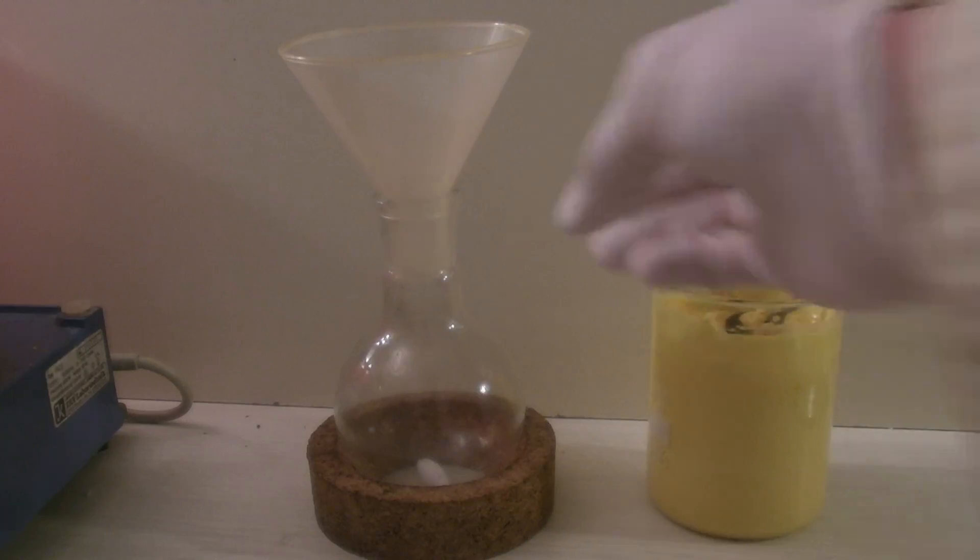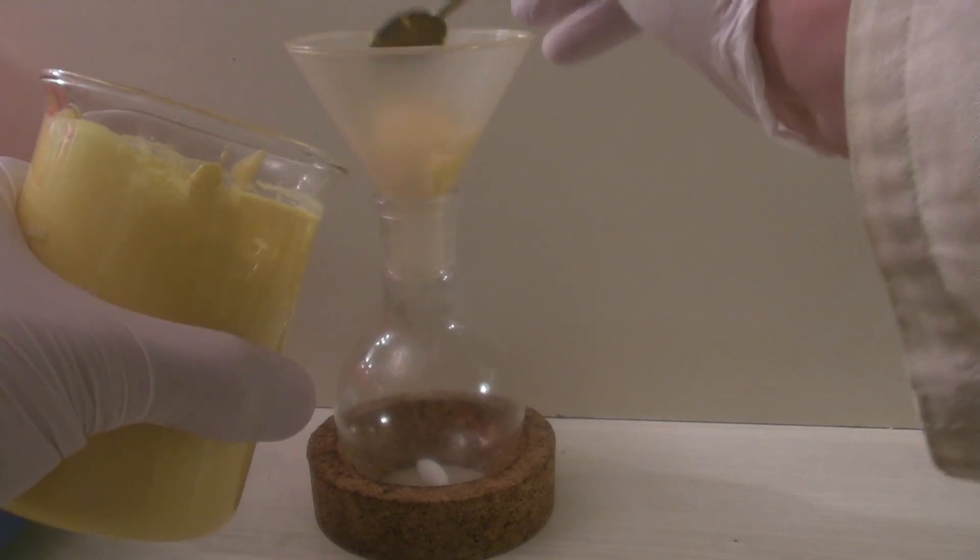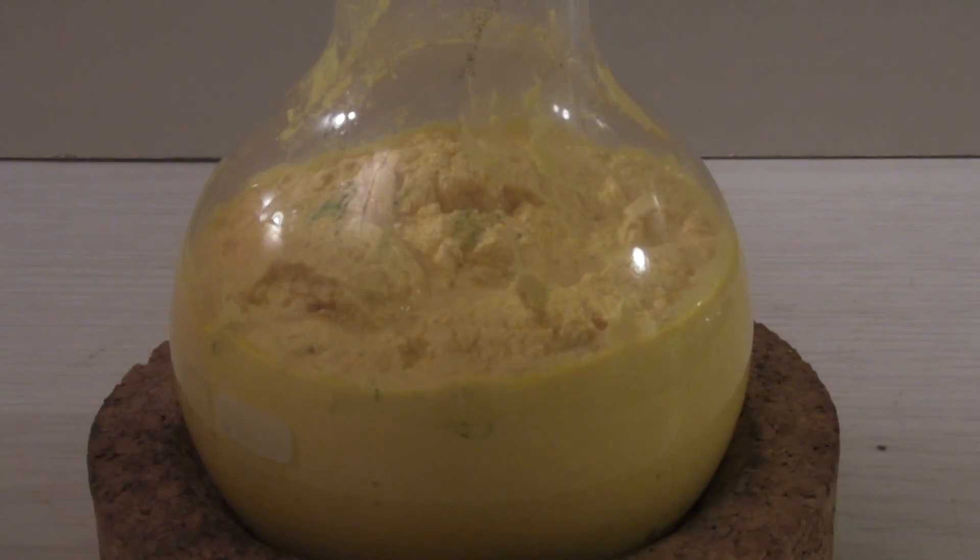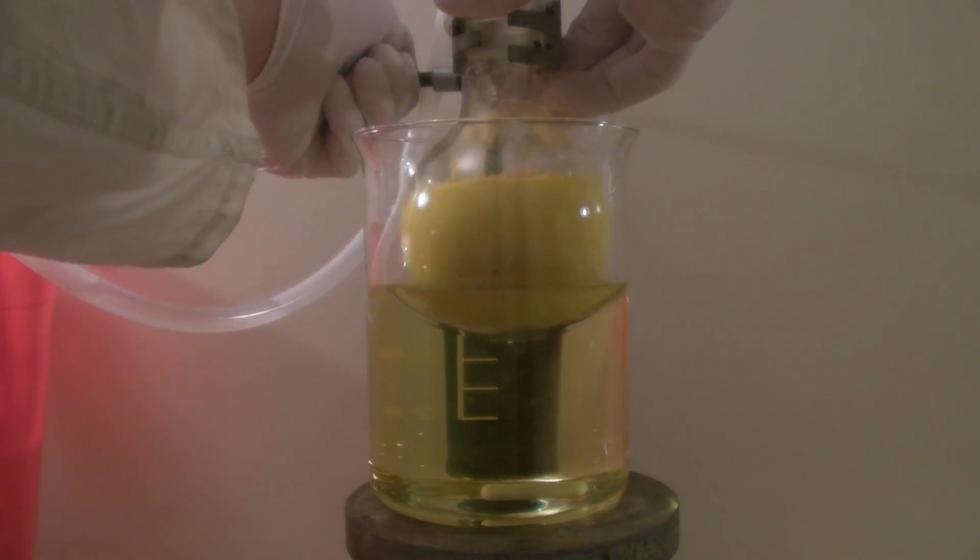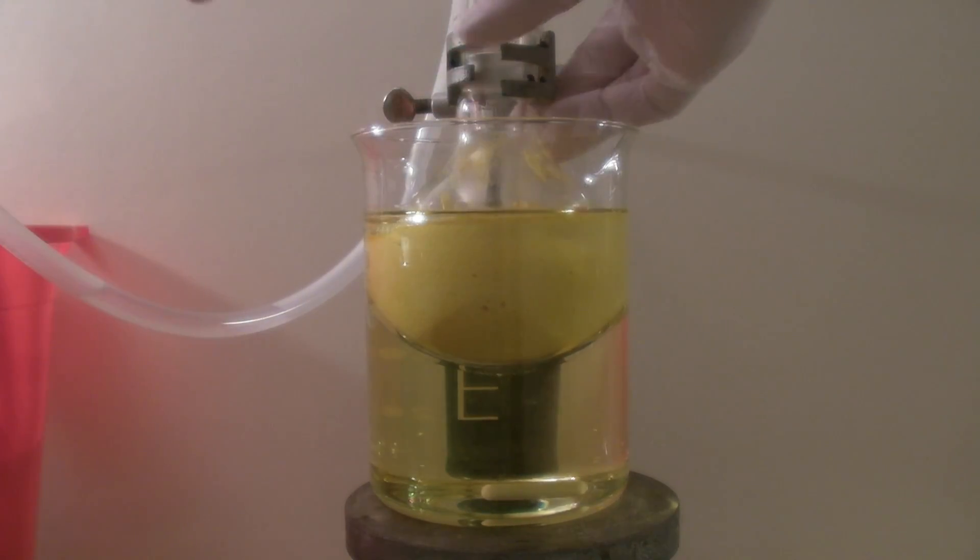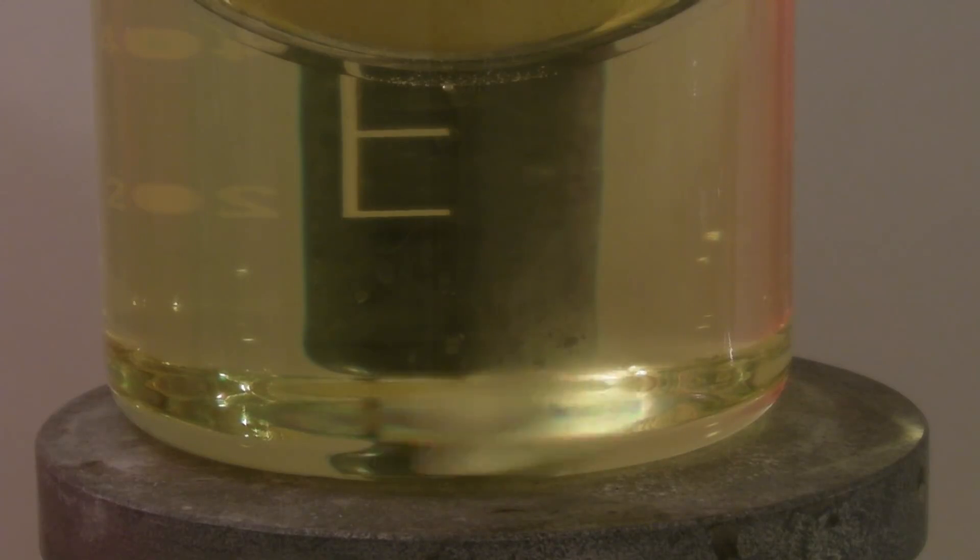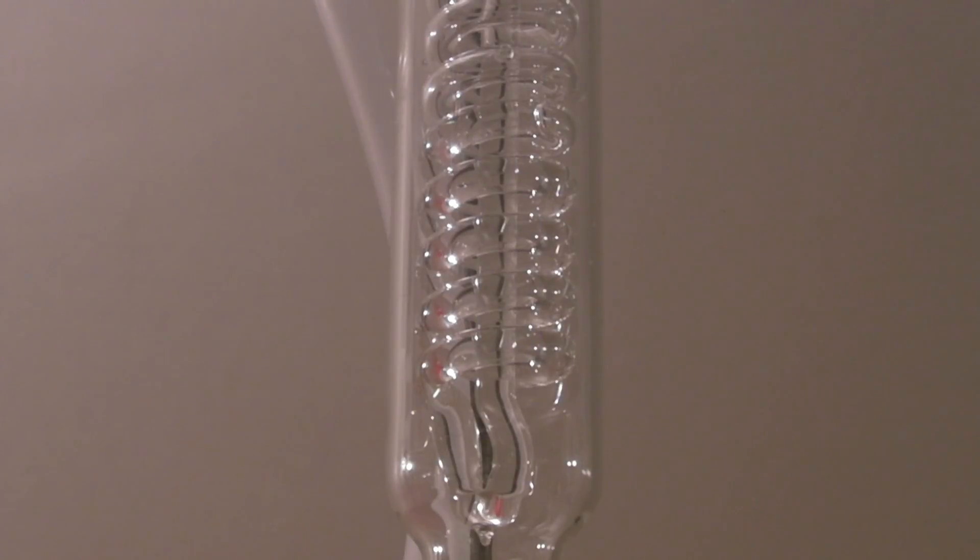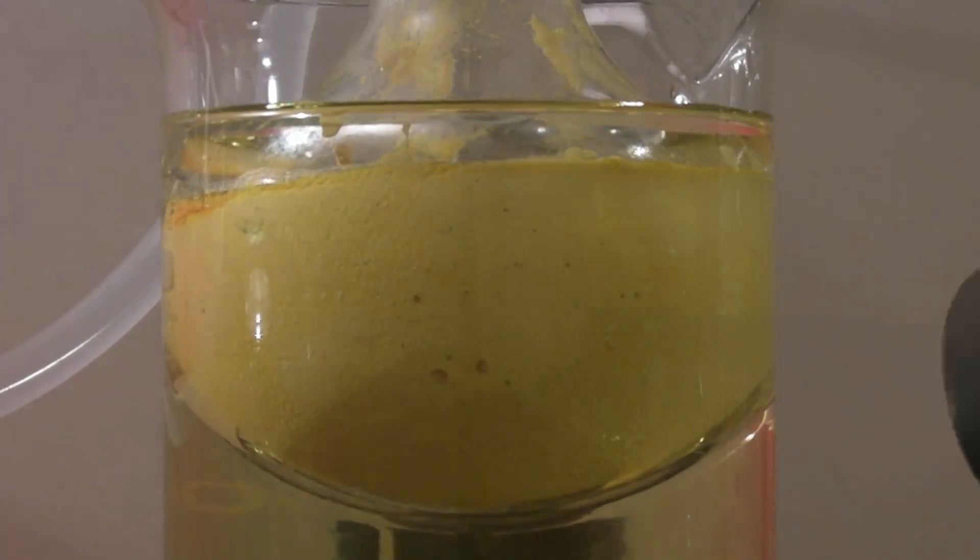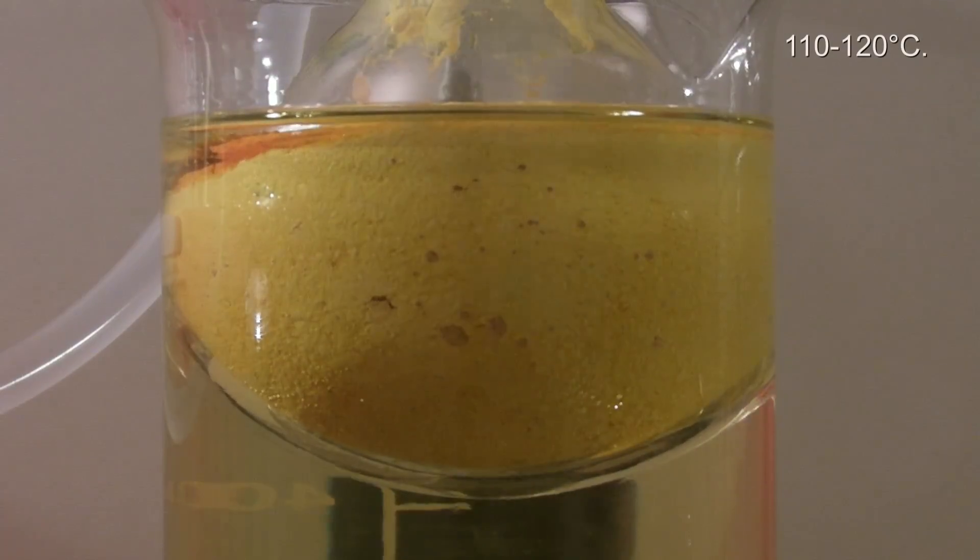Next the mixture is added to a round bottom flask. My largest flask was too small so I had to do this step in two batches. The flask was filled up to two-thirds of its volume, a stirring bar was added and it was connected to a reflux condenser. The oil bath was heated until the water in the mixture began to boil. This happened at a temperature of 110 to 120 degrees C.